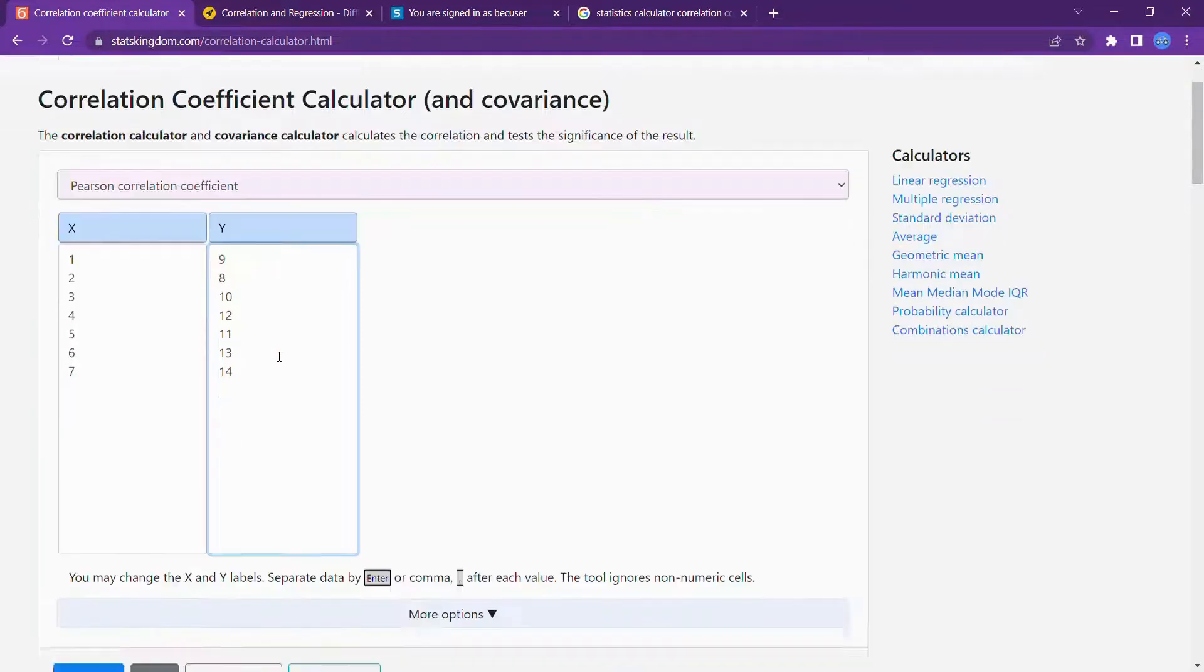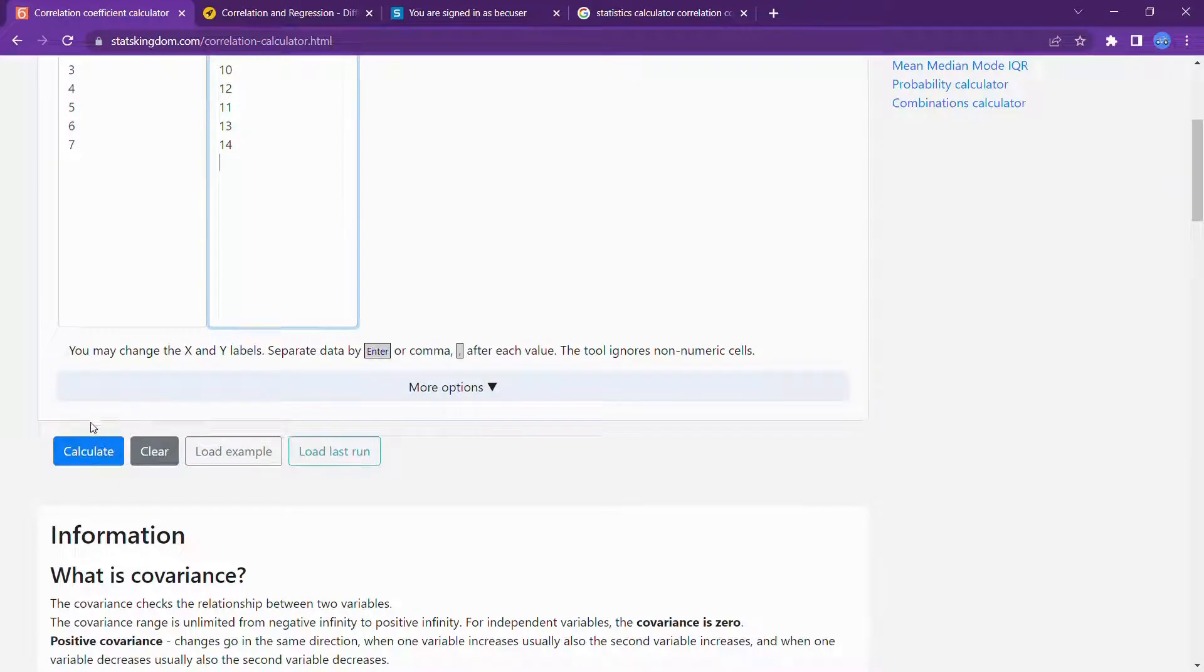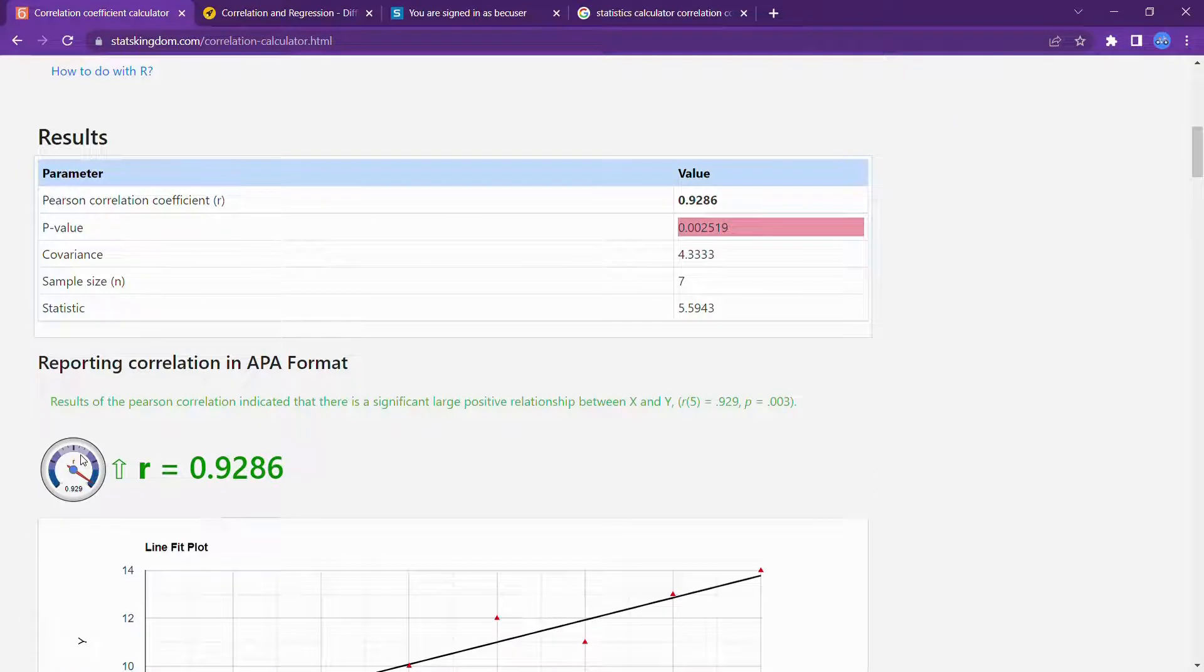After entering the values, here you can see the calculate button. You need to press this. Here you can observe the coefficient of correlation which is r equals 0.9268. This is the value of coefficient of correlation.